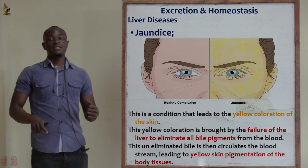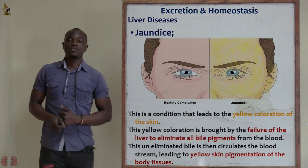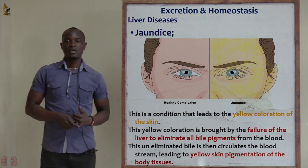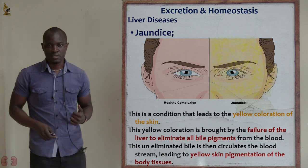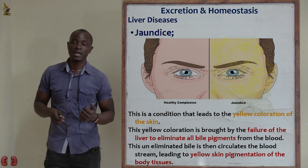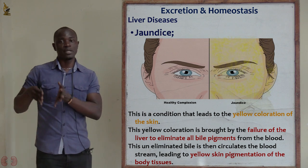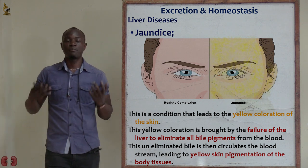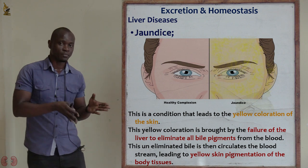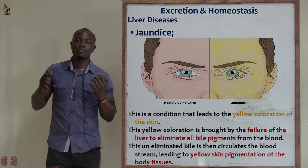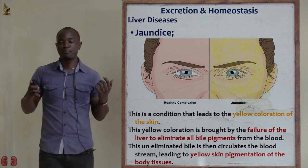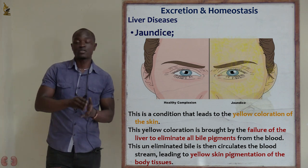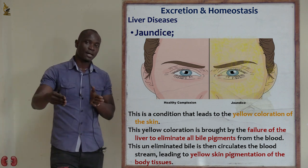Let's look at jaundice. Jaundice is simply a condition whereby there is failure of the liver to eliminate excess bile pigments from the breakdown of red blood cells. The liver is unable to remove bile pigments from the blood, so excess bile remains in the blood.